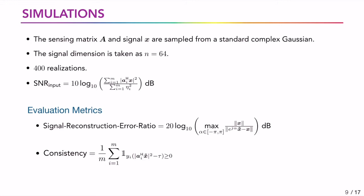To evaluate the simulation results, we look at two metrics. First is the signal reconstruction error ratio SRER. Here the metric is computed based on the global phase factor that maximizes the SRER. The other metric measures the consistency of the estimates. This is important since in practice the best way to judge the goodness of an estimate is to measure how consistent it is with the observations.